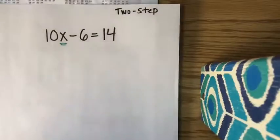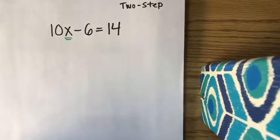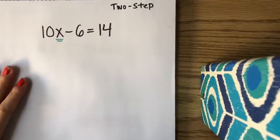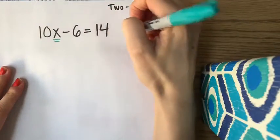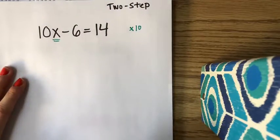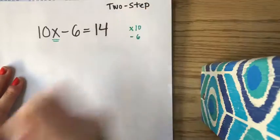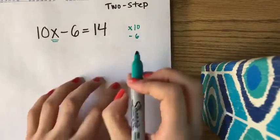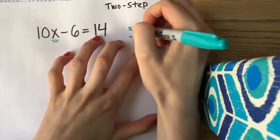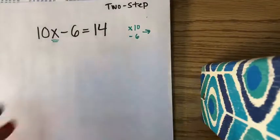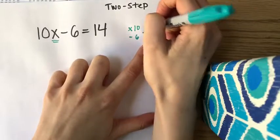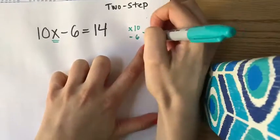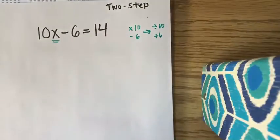The first thing I have to do is figure out what are the operations happening to x in my equation, and I see that x is being multiplied by 10 and then subtracted by 6. So I know when I solve this equation, I'm going to have to undo those two steps. To do that, at some point, I will divide by 10 and I will add 6, and that's how I solve this equation.